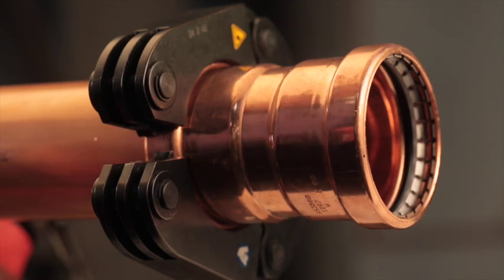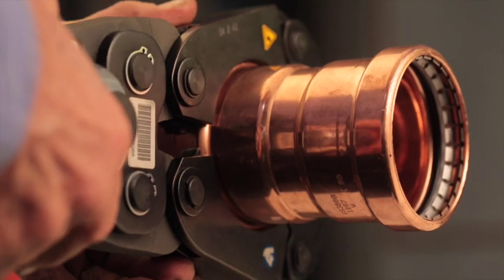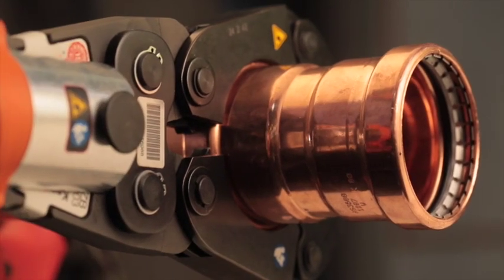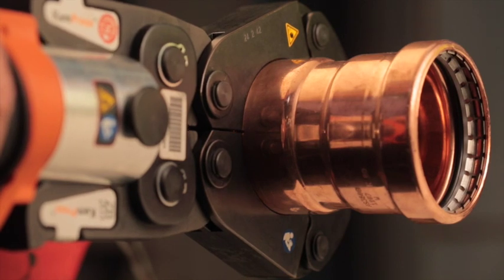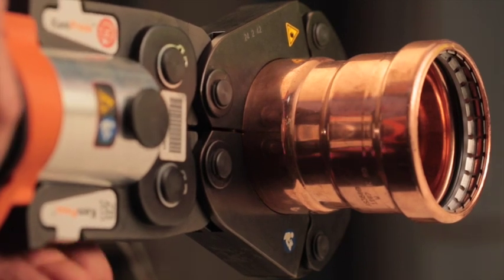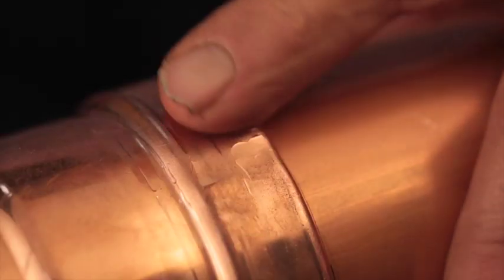Depress the jaw levers and attach to the press collar so that the claws of the jaw grip around the pins of the press collar. Ensure the fitting still lines up with the insertion depth on the tube. Press the start button to make the press. Release the adapter jaw from the collar and the collar from the fitting. Visually inspect the fitting and remove the Kempress label to indicate completion of the press.